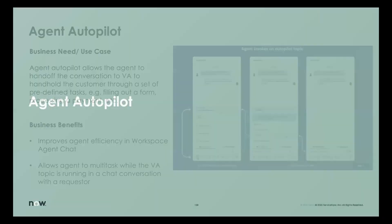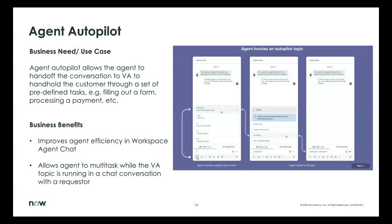The next feature I want to talk about is Agent Autopilot. The primary business case behind Autopilot is to save the agents time so that they can focus their efforts on more complex conversations. What I mean is, think of situations where agents are guiding or hand-holding end users through a series of steps that might be repetitive or not really complex.